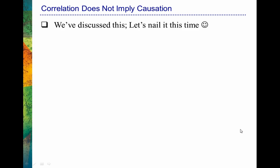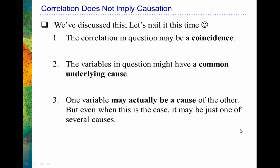Another important point we've touched on earlier in the semester: correlation does not imply causation. Just because two things are correlated doesn't mean one variable causes the other. I want to discuss three main reasons why correlation doesn't imply causation. First, it's possible that a correlation coefficient other than zero might simply be due to coincidence.